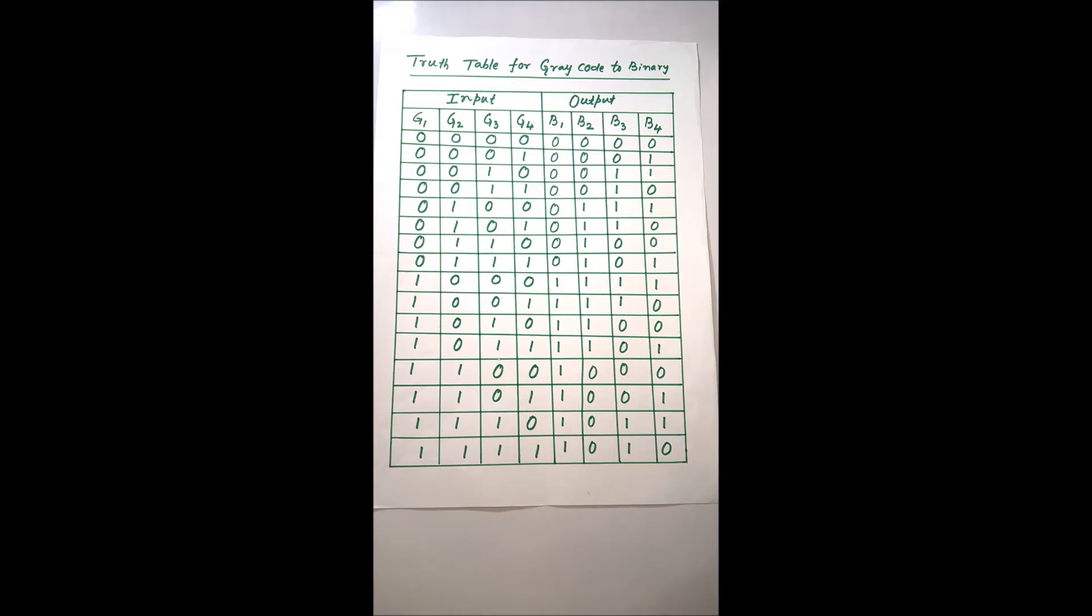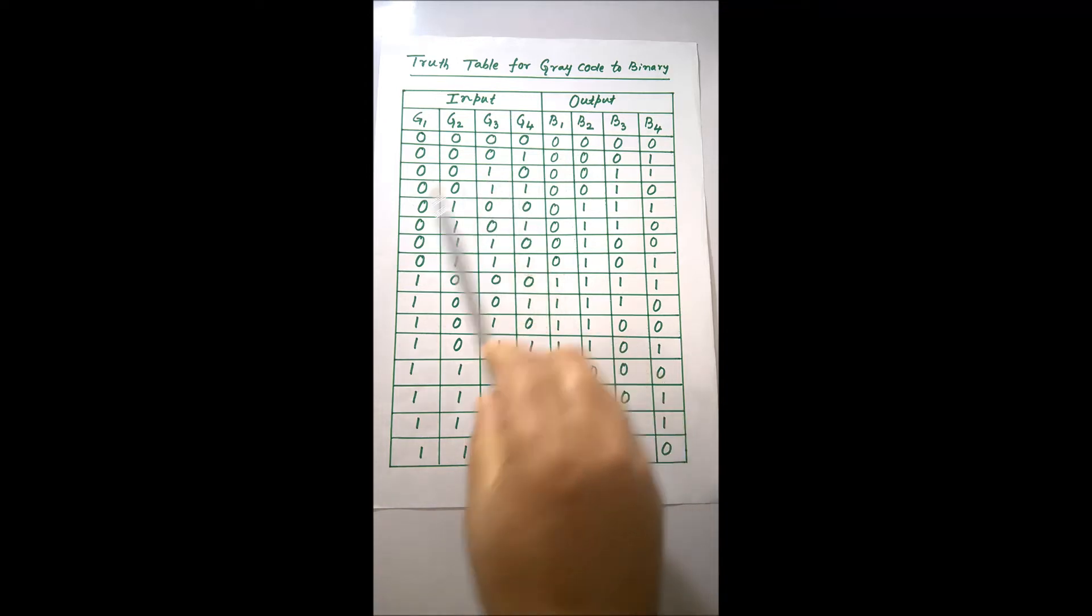This is the truth table for grey code to binary. Now I will show you how to get from grey code to binary for 4 bits. Now one method is that you convert from binary to grey first and then you can construct this table.